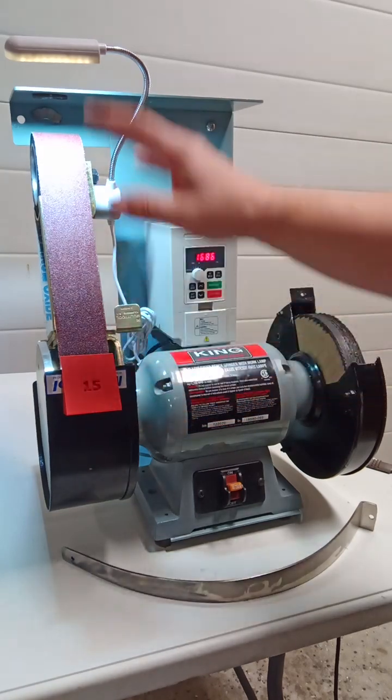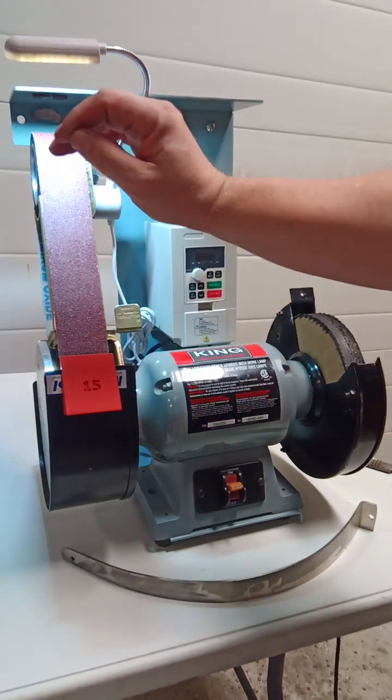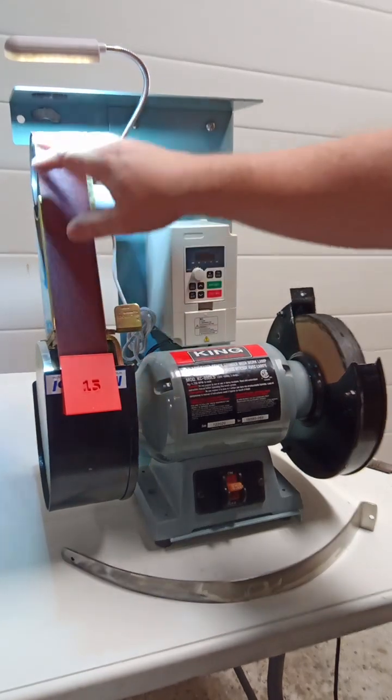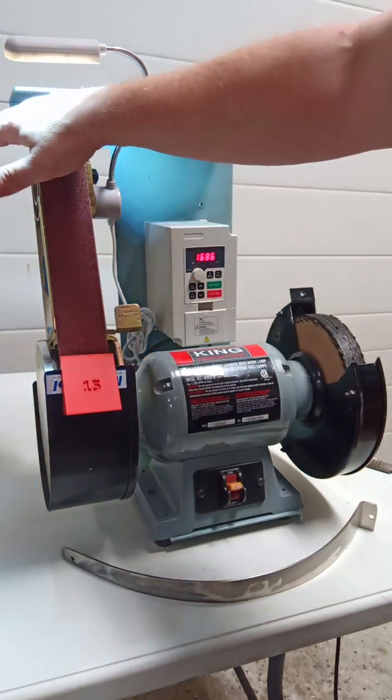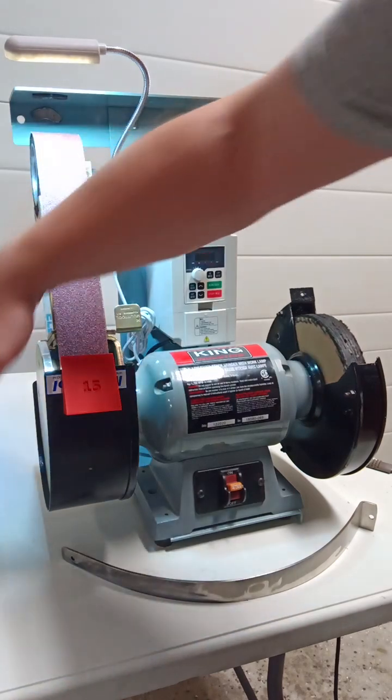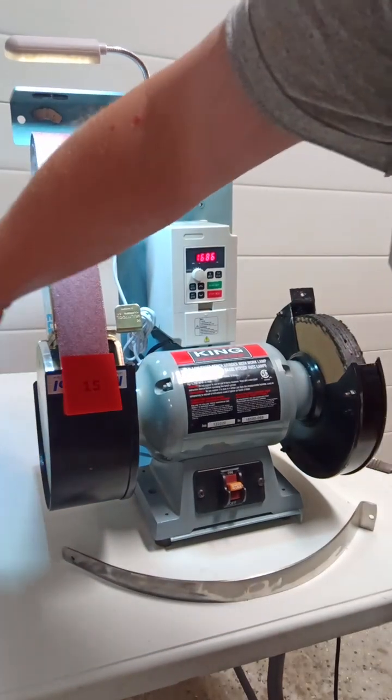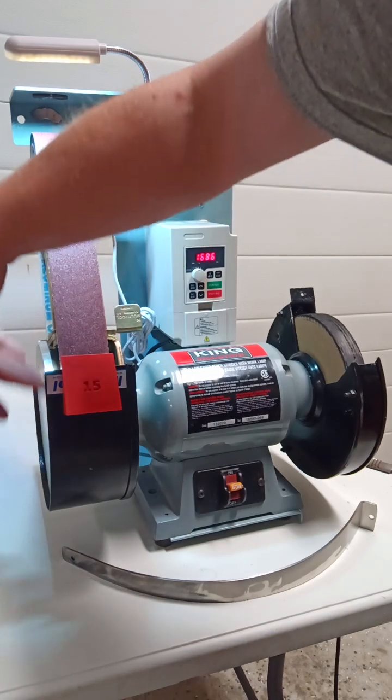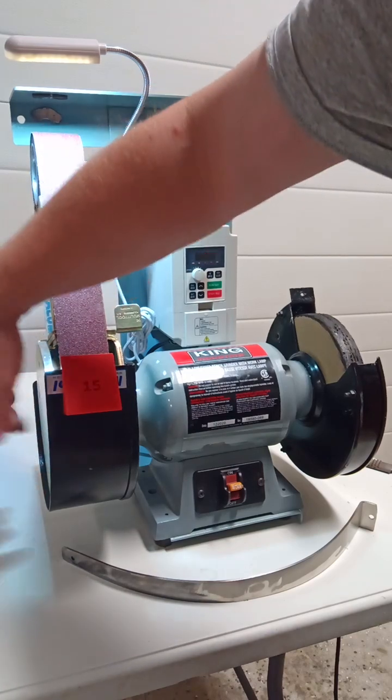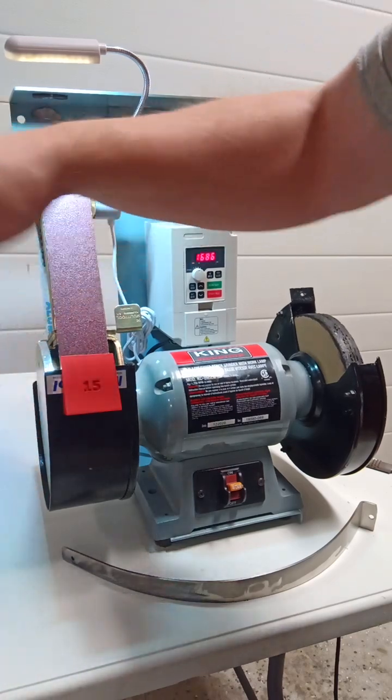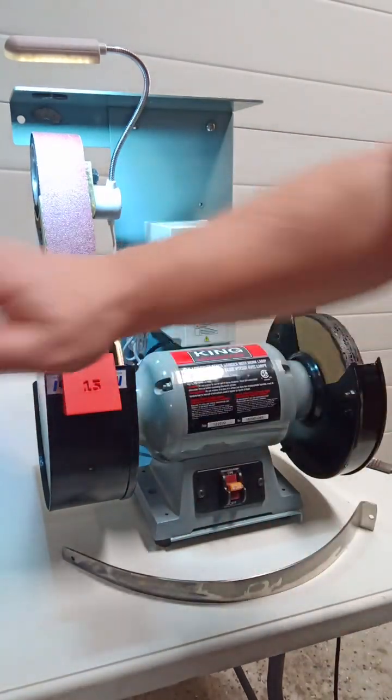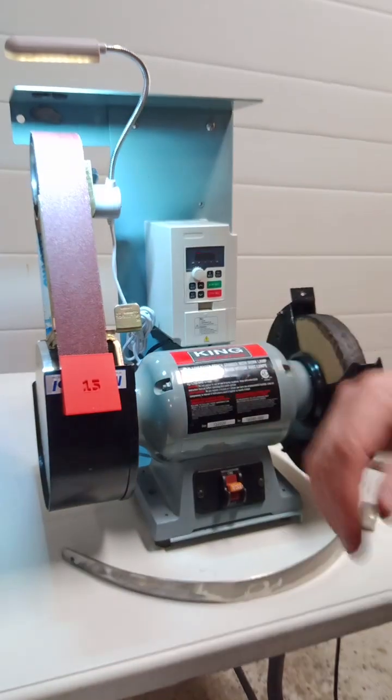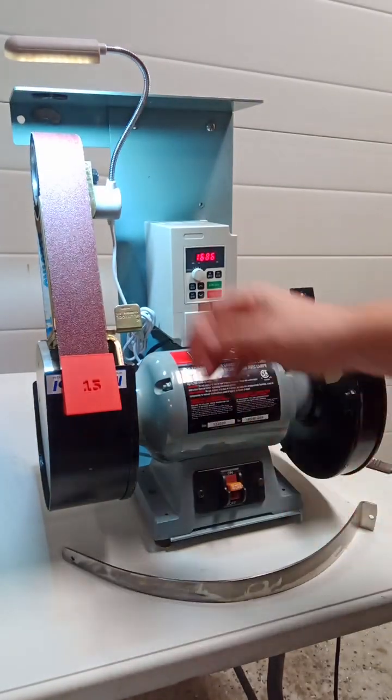Now the multi-tool itself does have different configurations. This is a 2x36, you can get a 2x48, you can get 2x with a large platen wheel. I've got the plate here that I could turn around and decide if I want to put the 7 inch disc sanding plate on there. But at this point in time, I really just wanted the 2 inch grinding belt for that capacity.